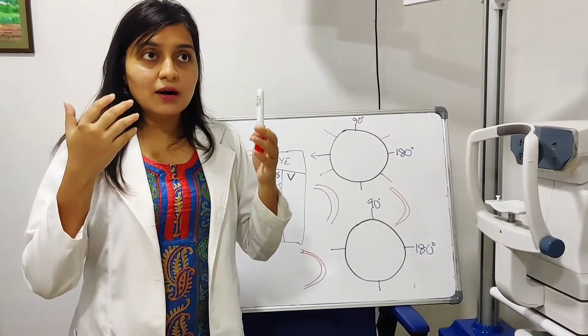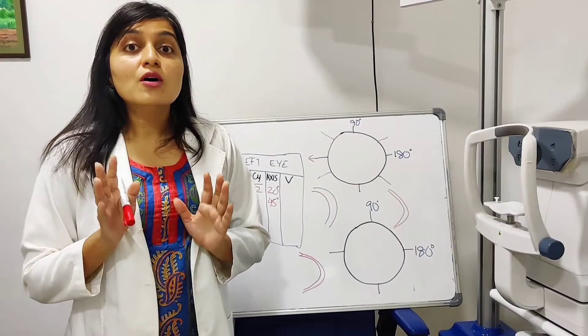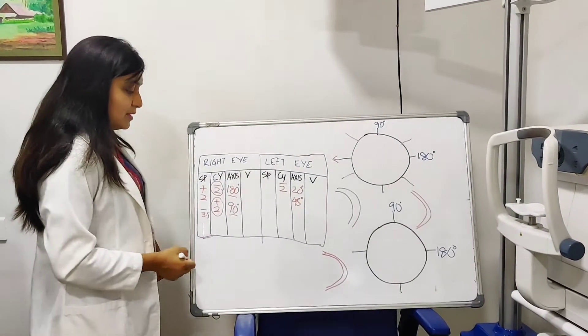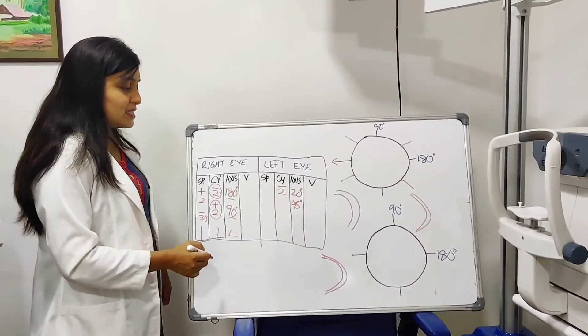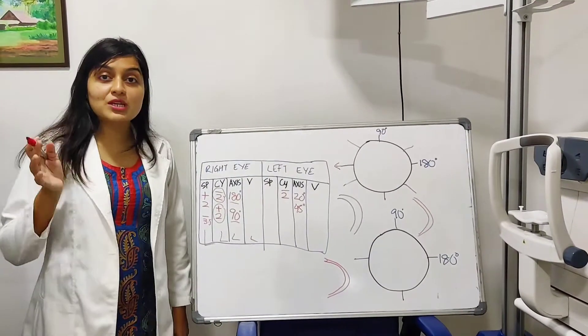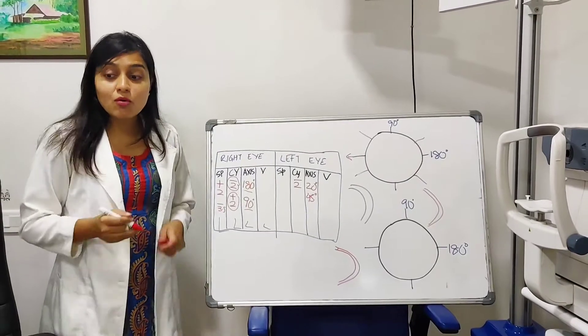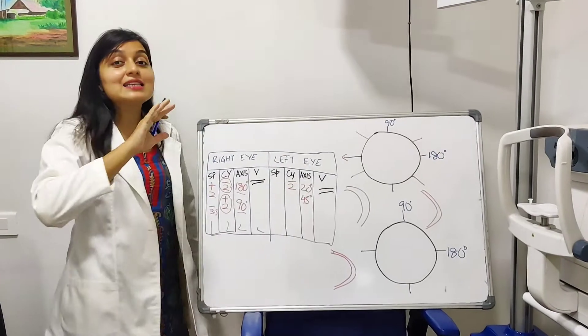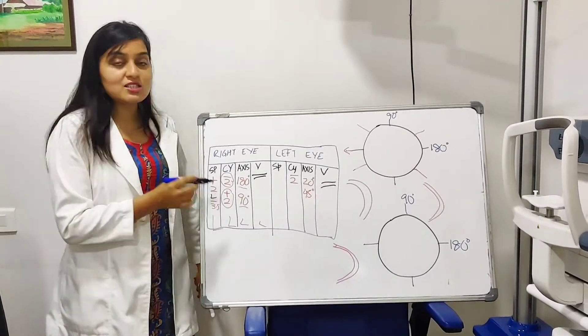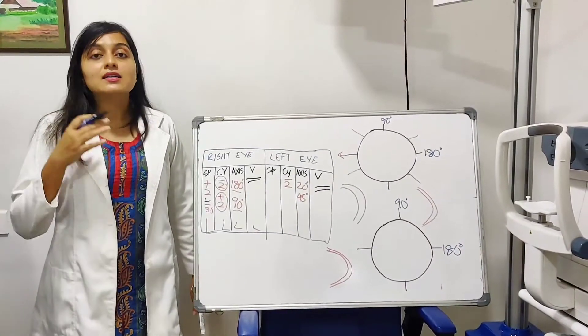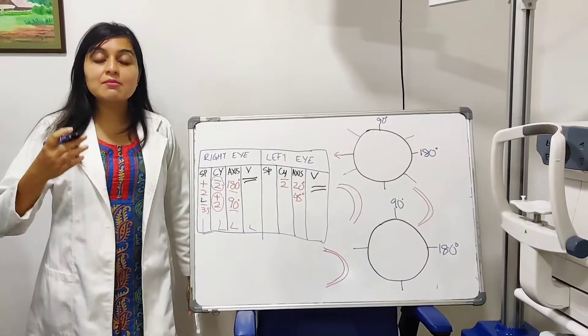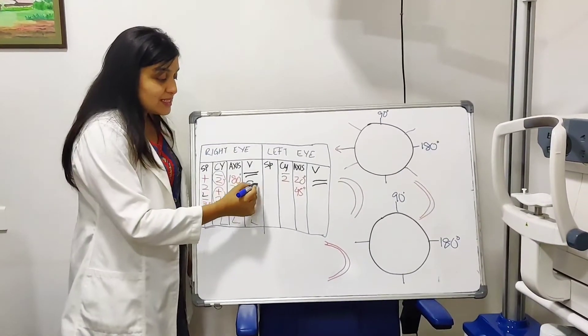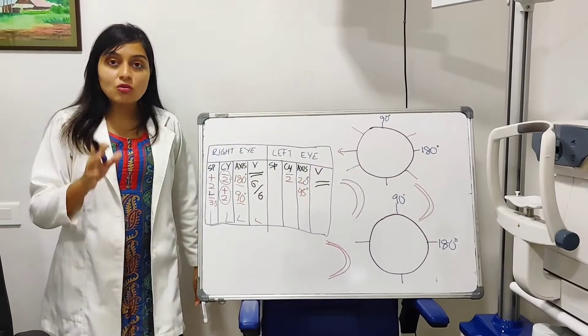So what is the most important part of this chart? Is it the spherical number? Is it the cylinder? Is it the axis? Or is it the vision? Which is the most important part in this chart? The most important part here is your vision. It does not matter if you have a very high spherical number also, it's fine, it's just genetics, nothing much that you could do about it, even if it is increasing minus 6, minus 7. If your vision is 6/6, then it's okay. You don't really need to worry.